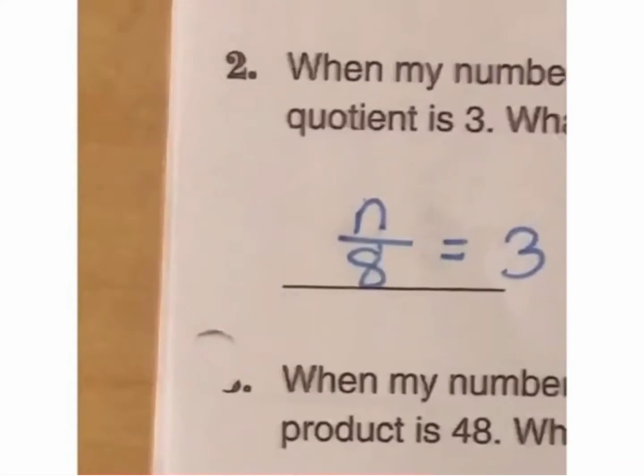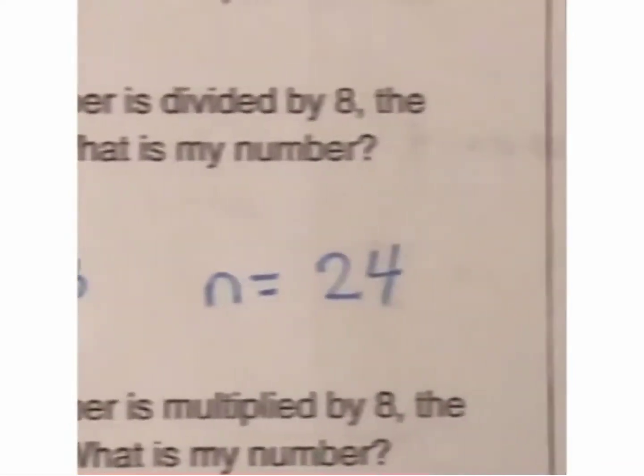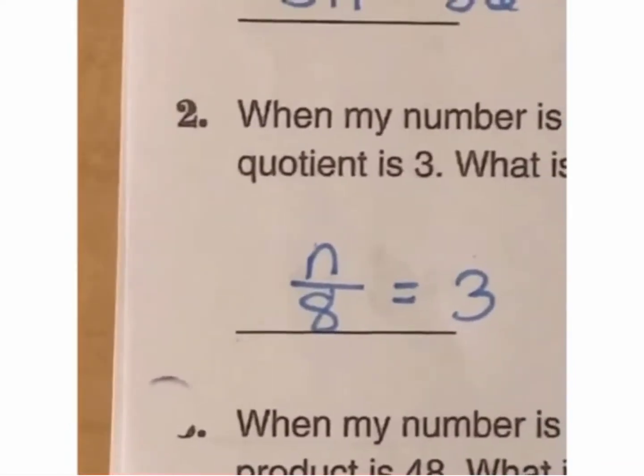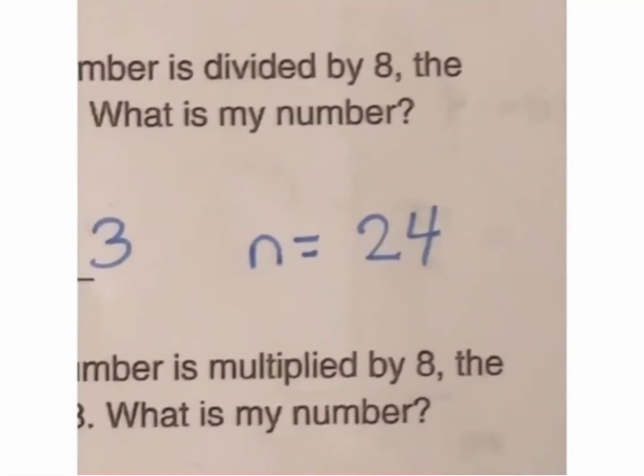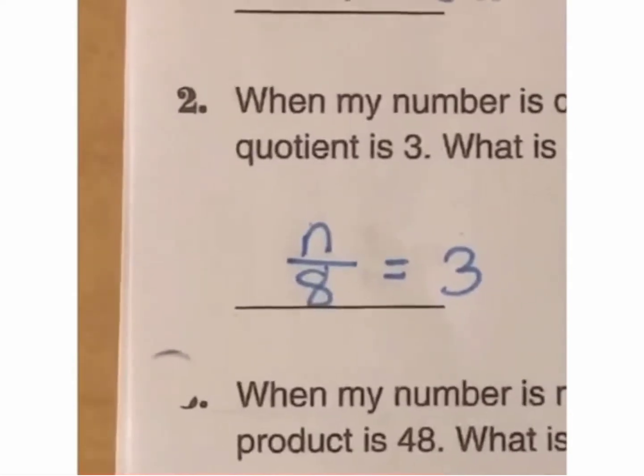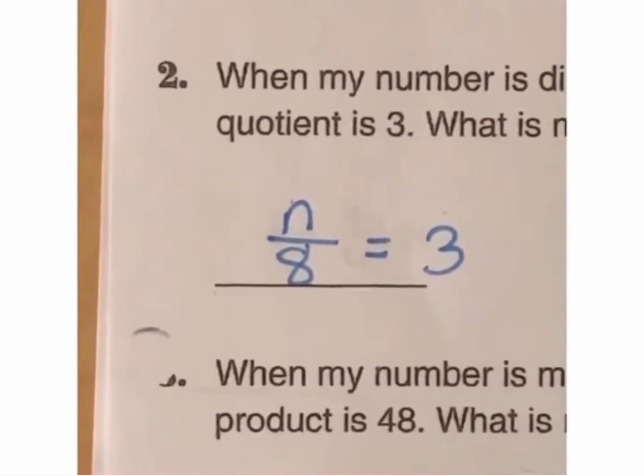When my number, n, is divided by 8, so n divided by 8, the quotient is 3. What is my number? 24. So, because 24 divided by 8 equals 3.